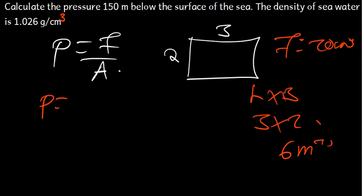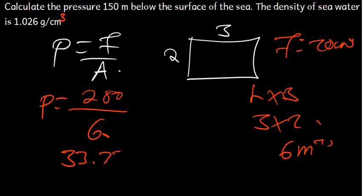So pressure is going to be equal to the force, which is 200, divided by the area, which is 6. So we can say that 200 divided by 6 is 33.33 newtons per meter squared.